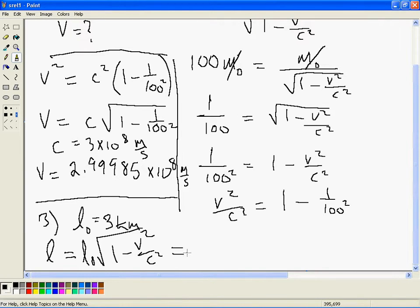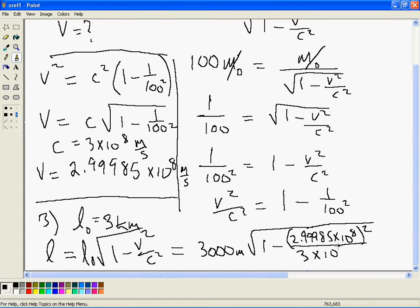And that would be 3,000 meters, which is 3 kilometers, times the square root of 1 minus 2.99985 times 10 to the power of 8 all squared, divided by 3 times 10 to the power of 8 all squared. And that, if you work it through your calculator, is 30 meters.